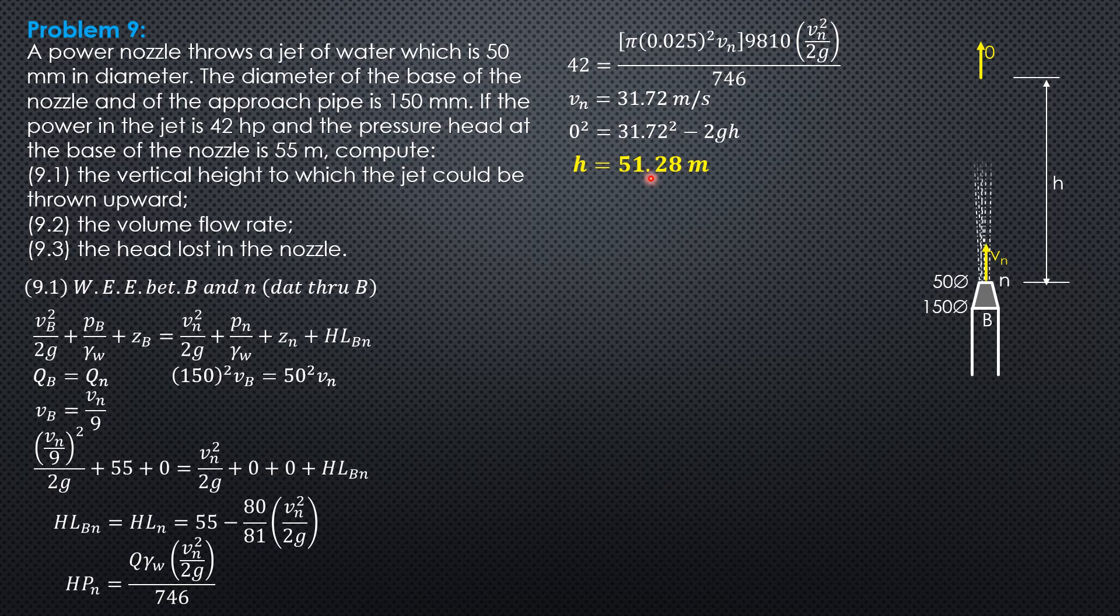Then having found vn we can now compute the volume flow rate or the discharge pi times 0.025 squared times 31.72 times 1000 to convert it to liters. So the volume flow rate or the discharge is 62.28 liters per second.